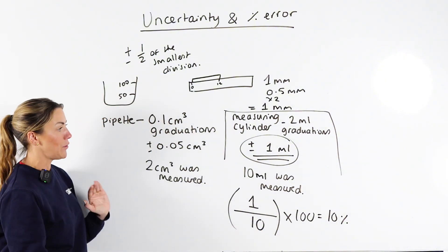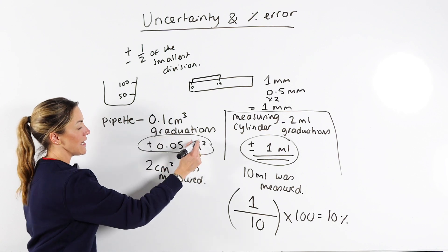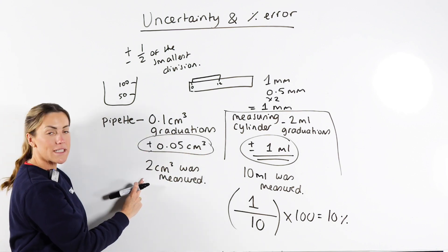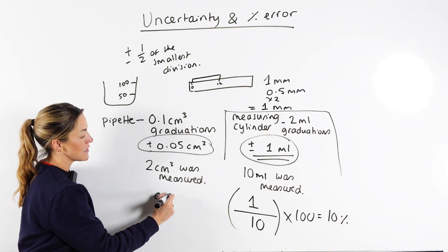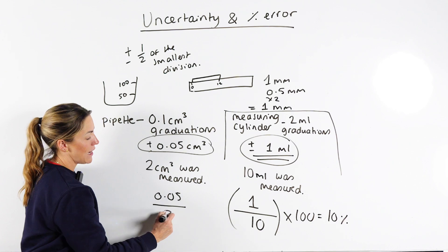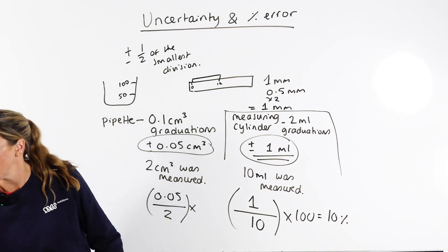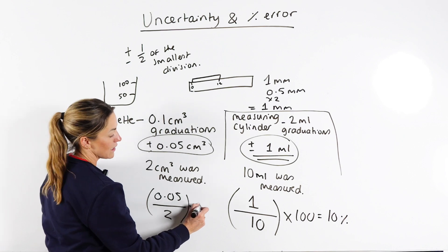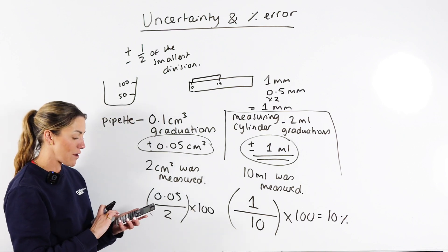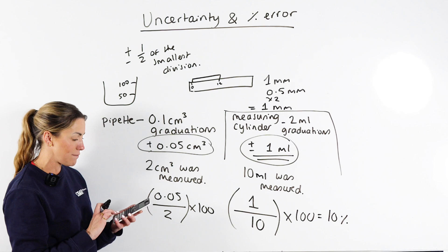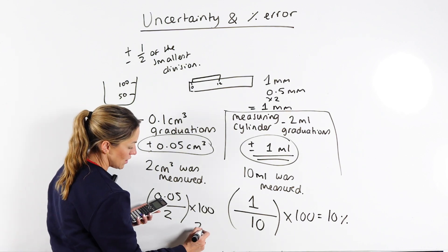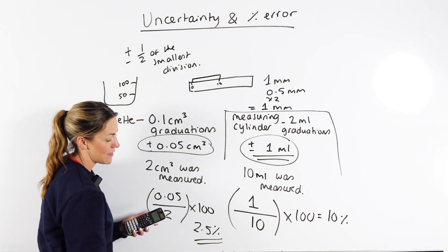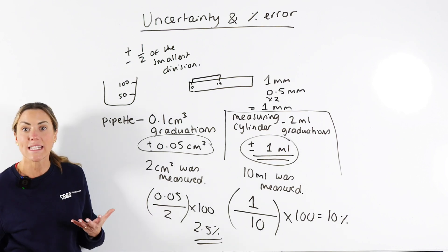Let's do one more with the pipette example. When we used the pipette we measured a volume of 2 centimeters cubed, so we do the uncertainty divided by the volume measured. The uncertainty was 0.05, so we do 0.05 divided by 2, then multiply by 100, and that gives a percentage uncertainty of 2.5 percent.